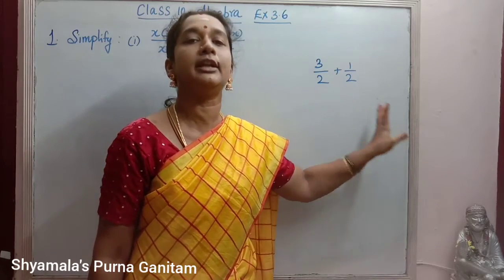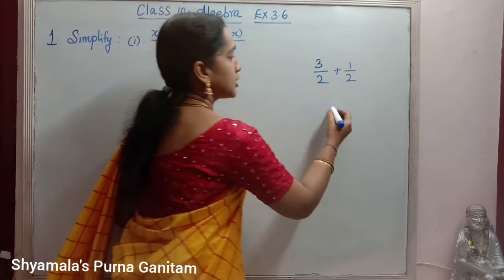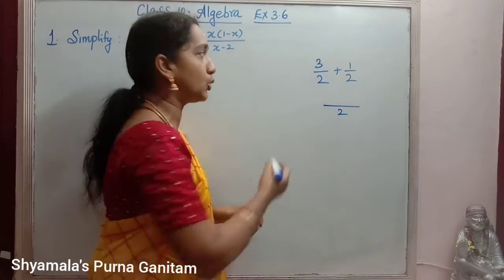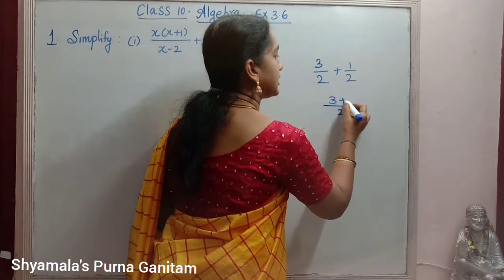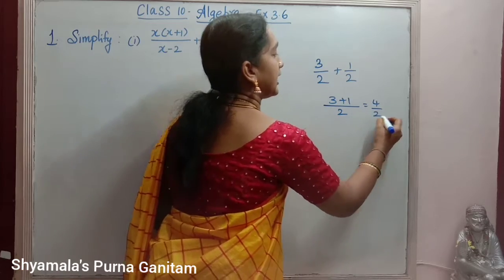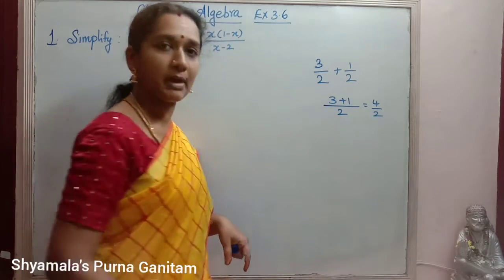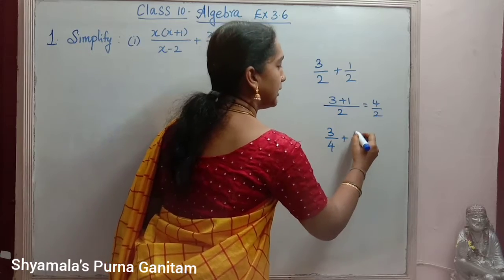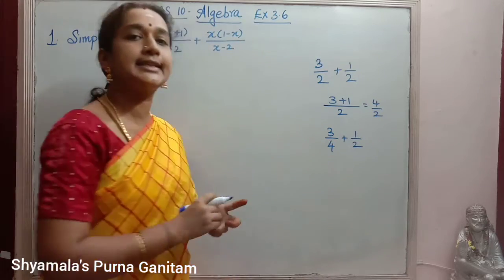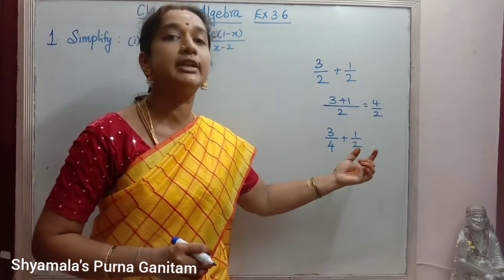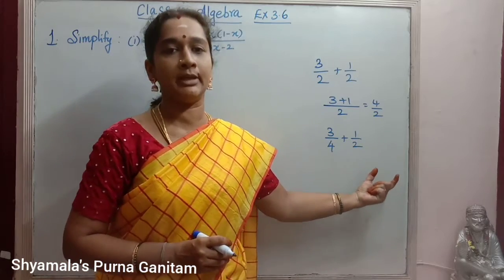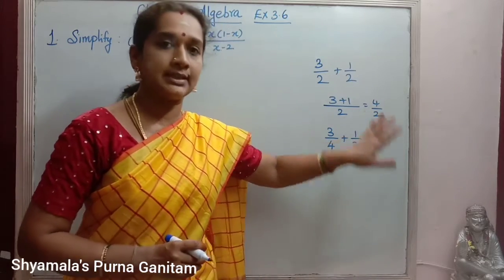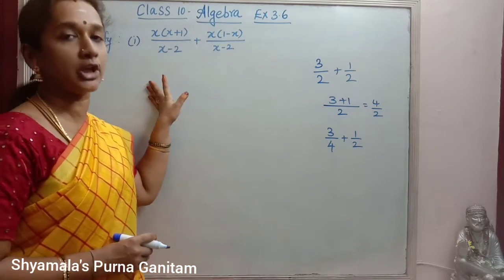That is, the denominators have the same value. So we write the denominator in common as 2, and in the numerator we write 3 plus 1, giving 4/2. Similarly, if we have 3/4 plus 1/2, we call these unlike fractions, so we take the LCM for the denominator and then simplify. The same procedure we are going to follow here.